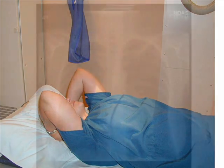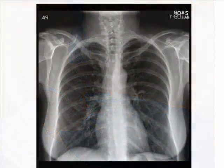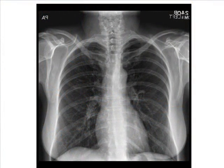The AP projection above the diaphragm demonstrates posterior ribs first through ninth lying above the diaphragm, with the first through seventh ribs from both sides visible on the posterior rib image.